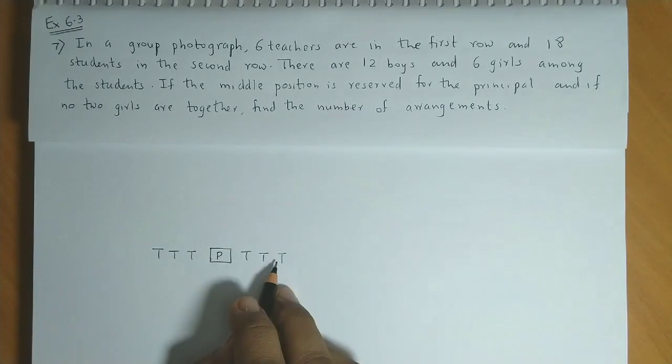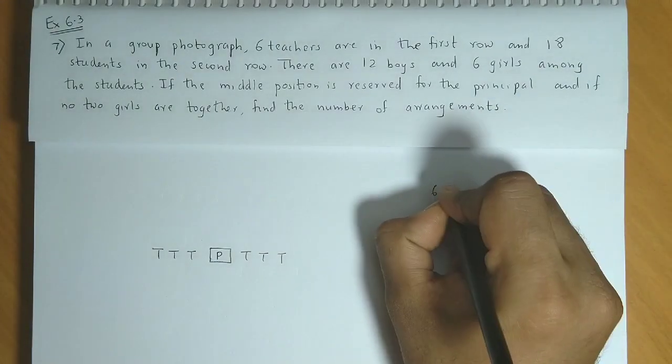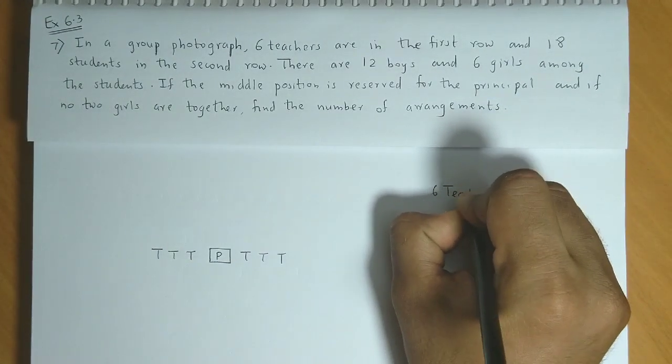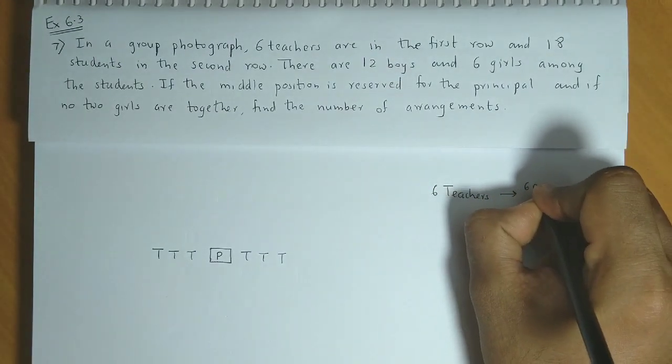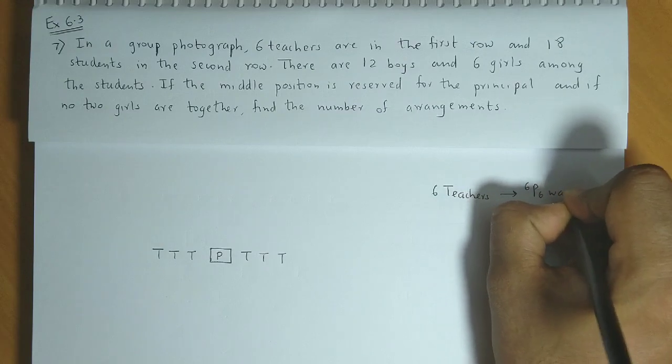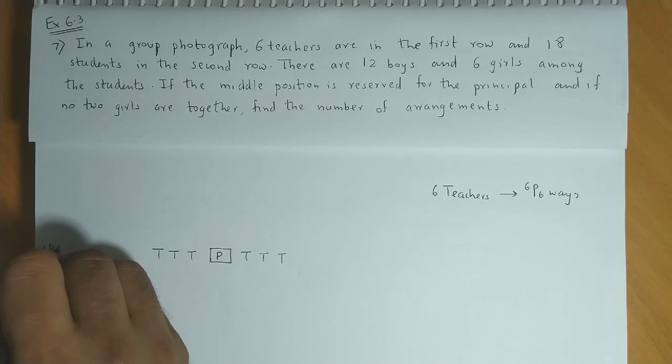So you have 6 teachers and the 6 teachers could be arranged in 6P6 ways. We write the arrangement for teachers. The 6 teachers could be arranged in 6P6 ways. This is our first row arrangement.